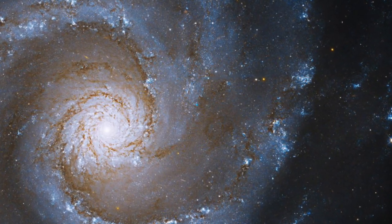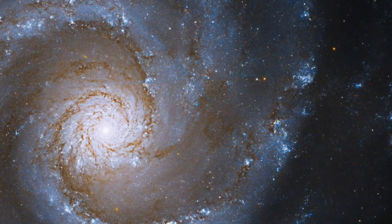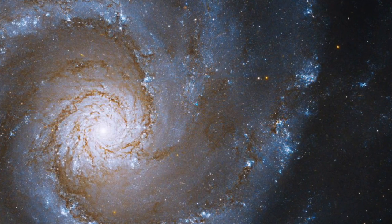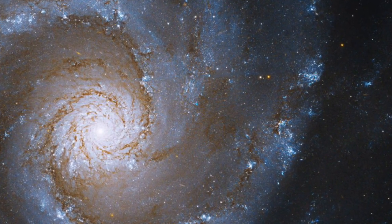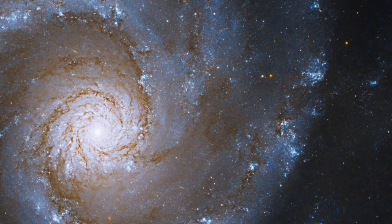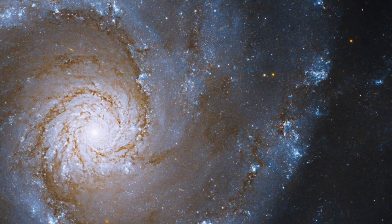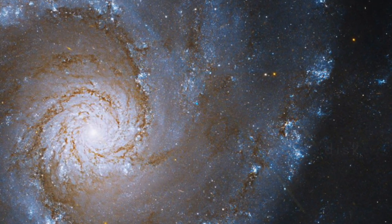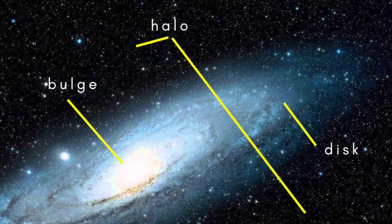A spiral galaxy, like the one in which we live, is a galaxy with a flattened disk and a central bulge from which emanate luminous spiral arms. As well as stars, the disk harbours extensive interstellar clouds of gas and dust. Surrounding the disk is a large spherical halo containing many older stars and globular clusters. Outside the visible halo is thought to be another much larger halo consisting of dark matter.